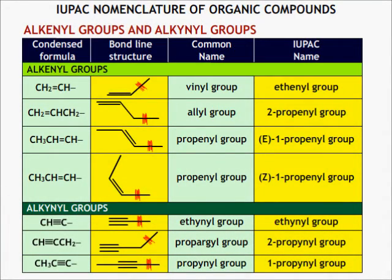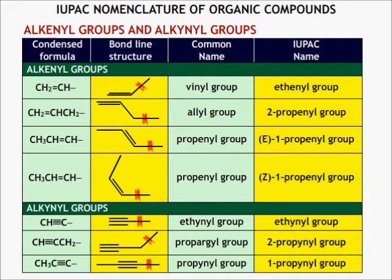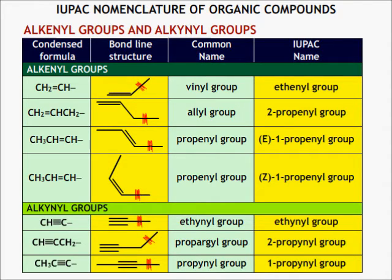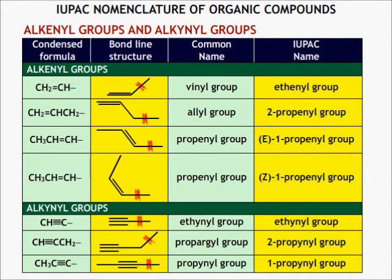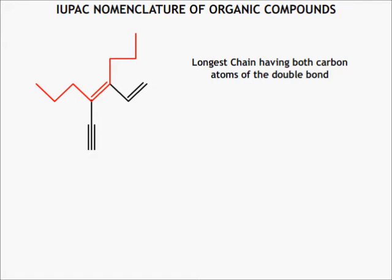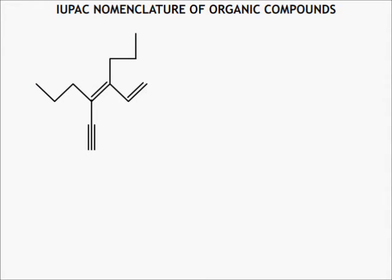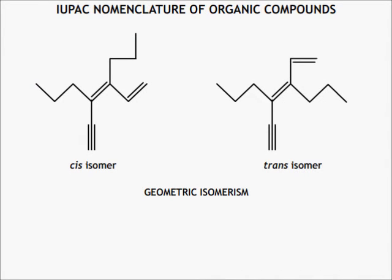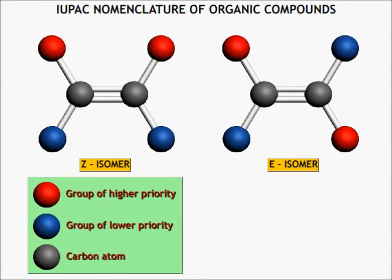Finally, I will mention some alkenyl groups containing double bonds and alkynyl groups containing triple bonds. Consider this compound: this chain is taken as the parent chain, which is the longest chain and contains both carbon atoms of the double bond. This double bond can exhibit geometric isomerism. In such a case, IUPAC suggests using E/Z notation rather than the cis/trans terms. When two groups of higher priority are on the same side, it is the Z isomer; otherwise it is the E isomer.